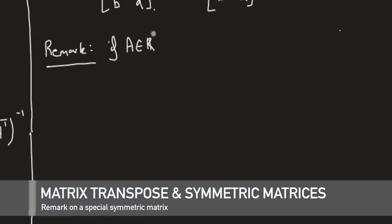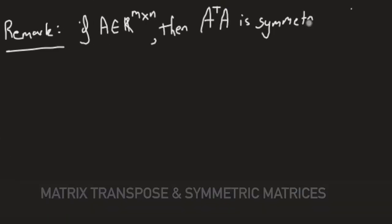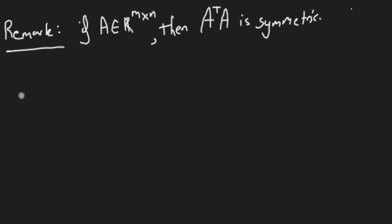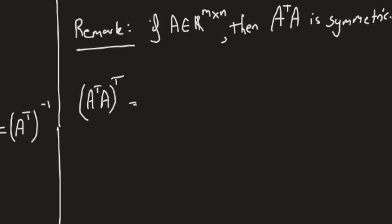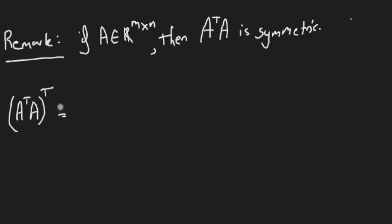Let's give a small remark here. If A is rectangular, that is m by n, then A transpose A is symmetric. How do we prove that? Well, let's take the matrix that we should prove to be symmetric, take its transpose, then use property 4 right here. Saying that AB transpose altogether is B transpose A transpose.